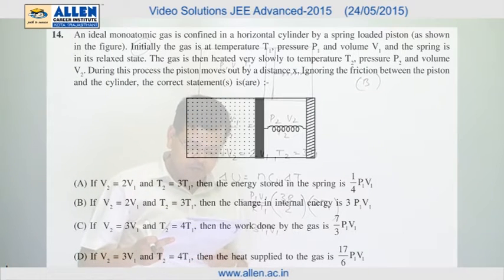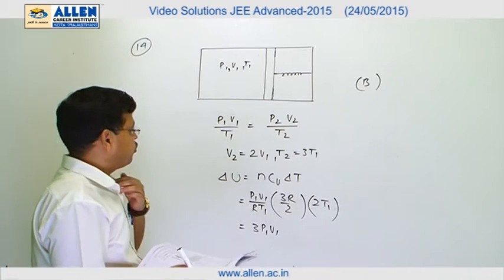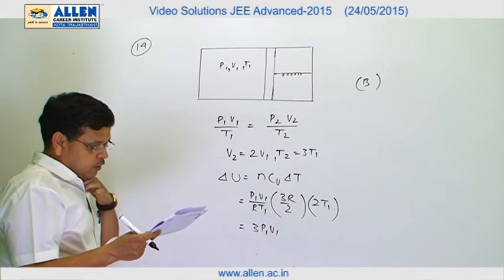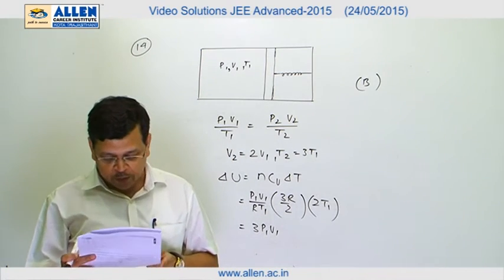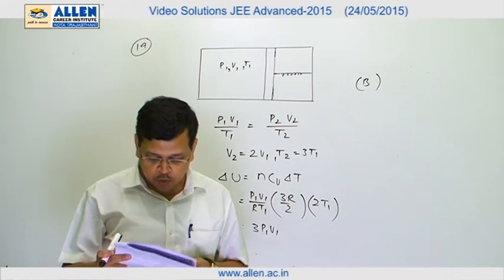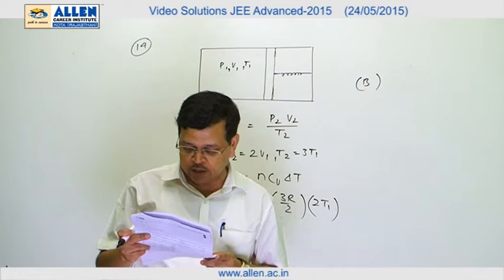An ideal monatomic gas is confined in a horizontal cylinder by a spring-loaded piston as shown. In the options, various values of volumes and temperatures are given, and we have to calculate the energy stored in the spring and the change in internal energy.